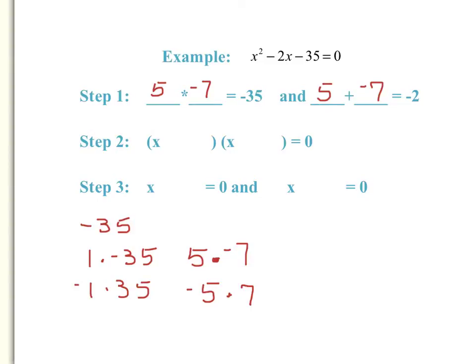Now let's go to step 2. We are ready to write the trinomial part of this equation in factored form. I have two pairs of parentheses started, and x is the first term in each set because x times x is x squared. Now I'm going to write a factor of 35 in each parentheses and take the sign with the number. In the first parentheses, because I have the factor of positive 5, I'm going to write plus 5. In the second set of parentheses, because I have the factor of negative 7, I will write minus 7.